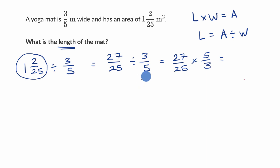And so this is going to be equal to, and actually I'm going to factor this out a little bit to simplify things. 27 is three times three times three, 25 is five times five.